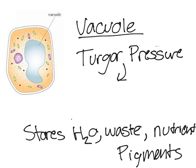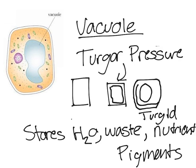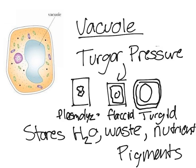There are three different states for a plant cell. When the vacuole is full and pushes the membrane outward, the cell is turgid. If the cell is a little bit shriveled up and the vacuole is smaller, it is flaccid. And finally, if the cell is completely shriveled up and the vacuole is shriveled as well, it is called plasmolyzed.